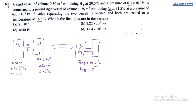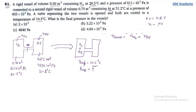Initially we have some moles of hydrogen and some moles of argon. The total moles after opening the valve remain the same — total moles = moles of hydrogen + moles of argon. Moles can be calculated using PV = nRT, so n = PV/RT.